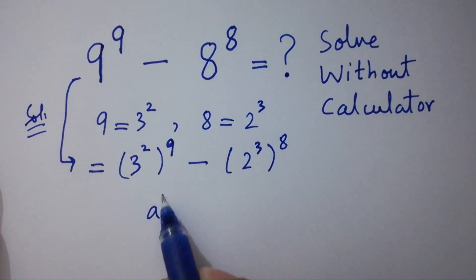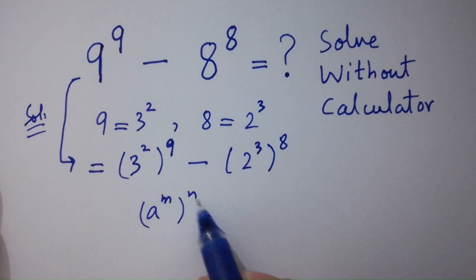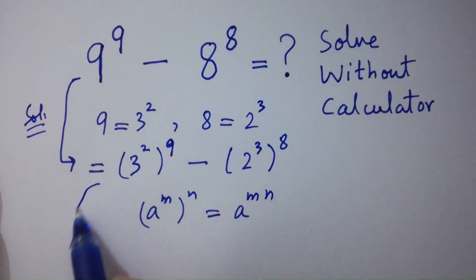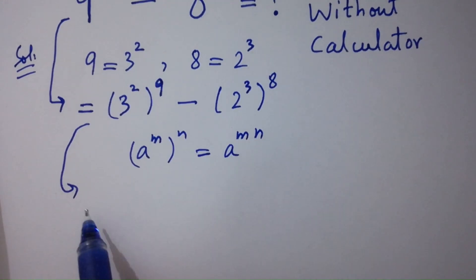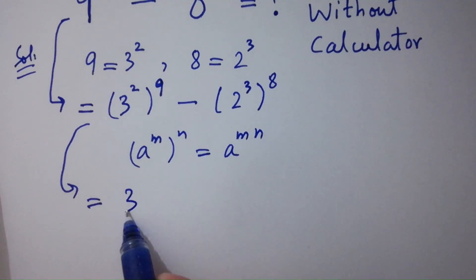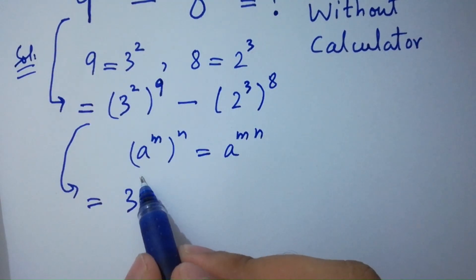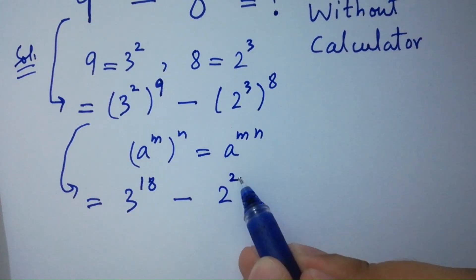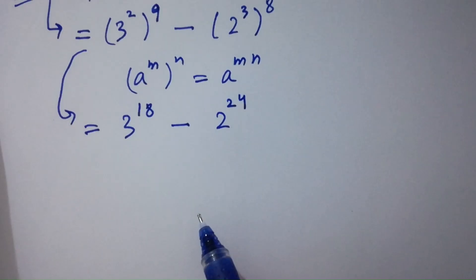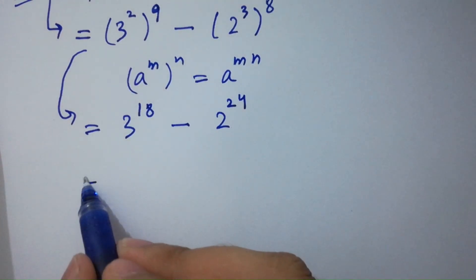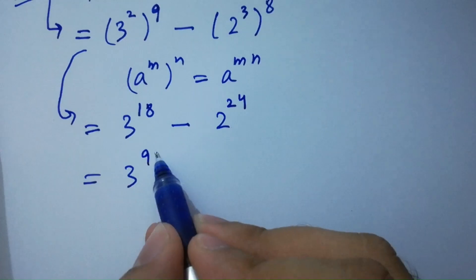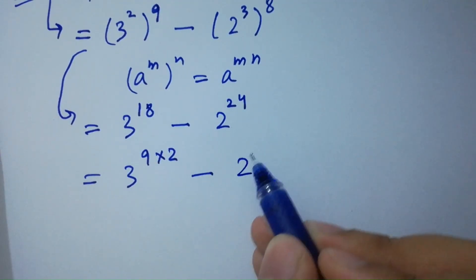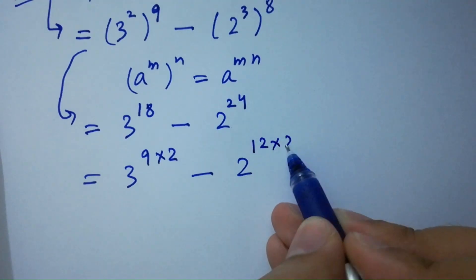Using the rule a^m to the whole power n equals a^(mn), it becomes 3^(2×9) minus 2^(3×8), which is 3^18 minus 2^24. This is the same as 3^(9×2) minus 2^(12×2), which are exponents 18 and 24.